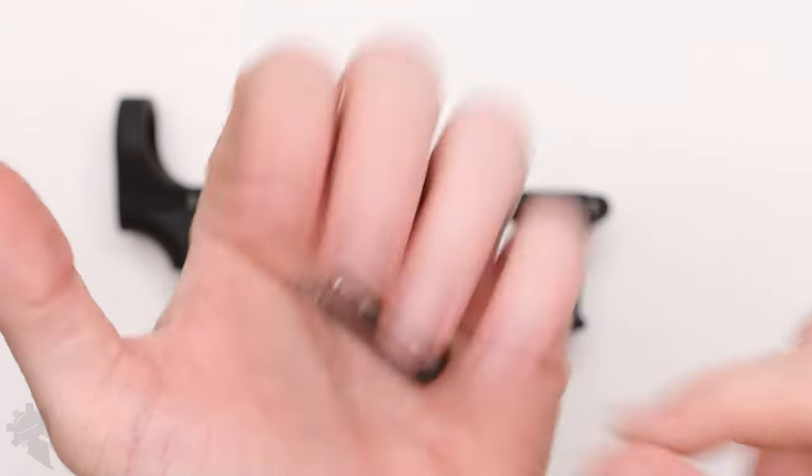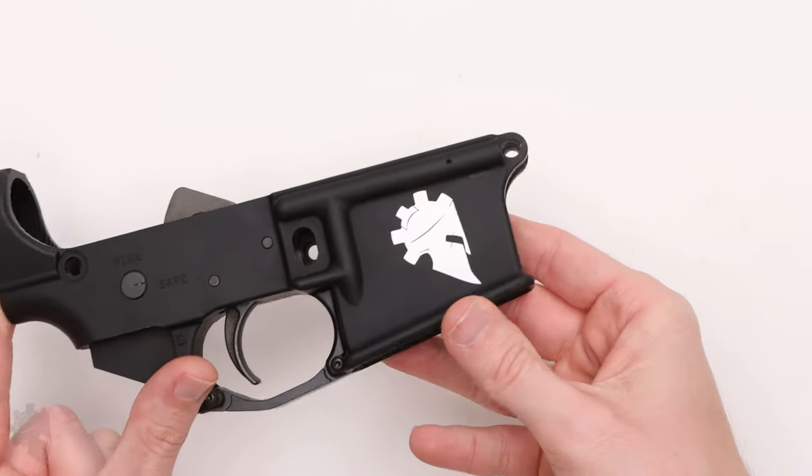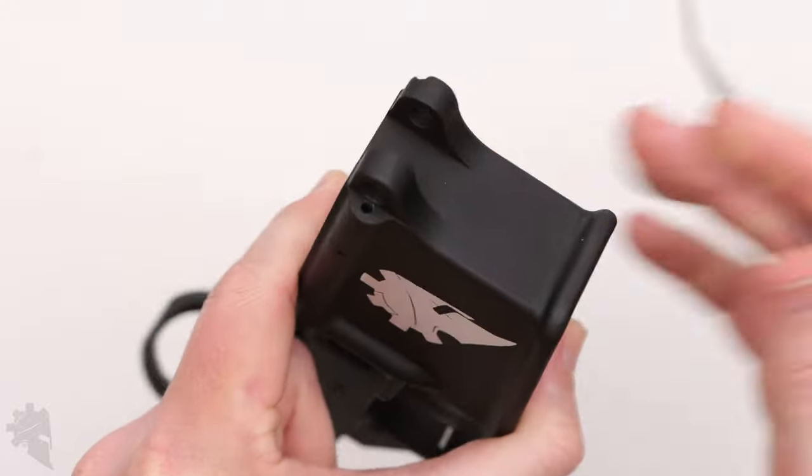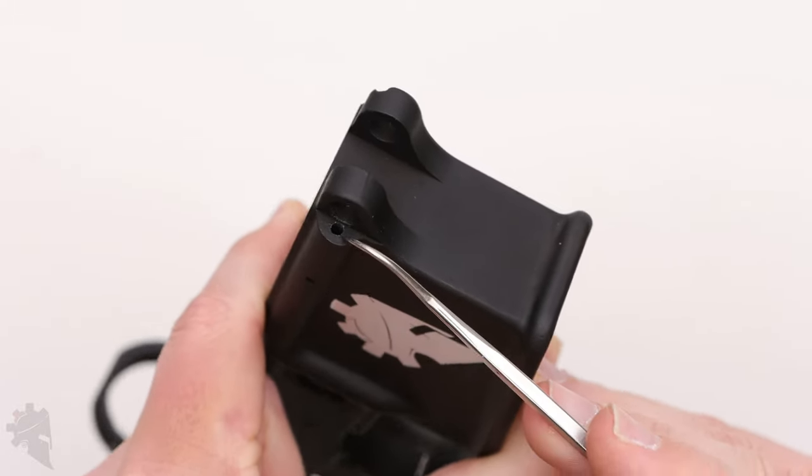This is the front takedown pin that goes into the front holes here in your AR-15 lower receiver. If you look at your lower carefully you'll see that there is a very small hole right here on the right side of those pins.